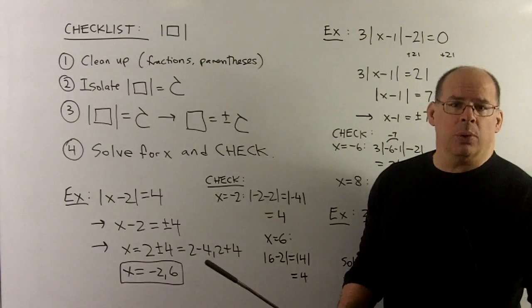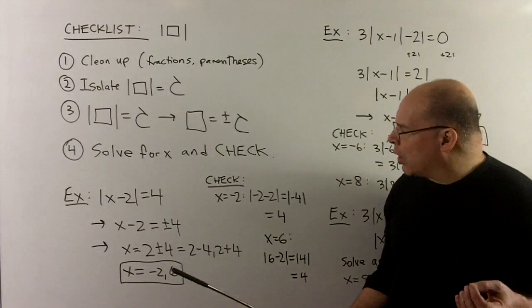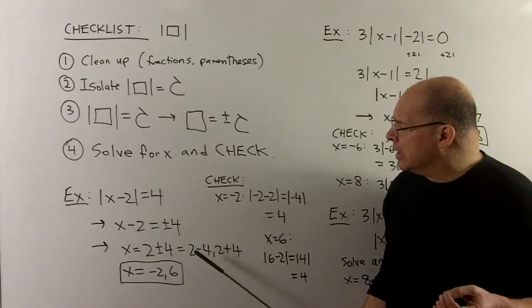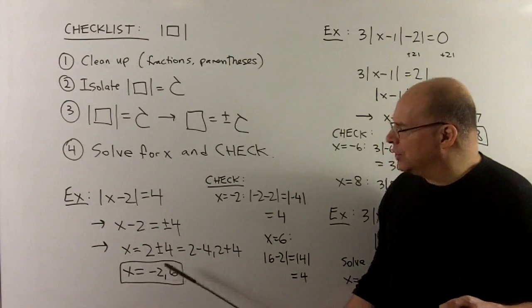That's really two numbers, 2 minus 4 and 2 plus 4. So we'll get x equal to minus 2 and 6.